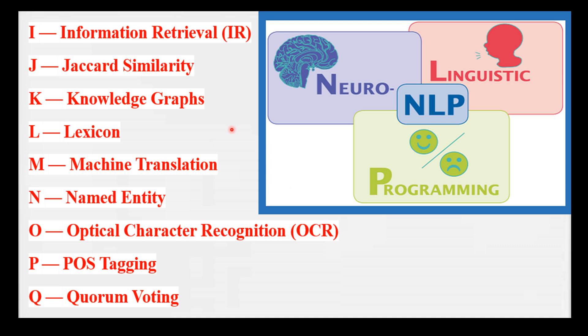M is for Machine Translation — converting text from one language to another using NLP techniques. Think of a translator who can translate text from one language to another.